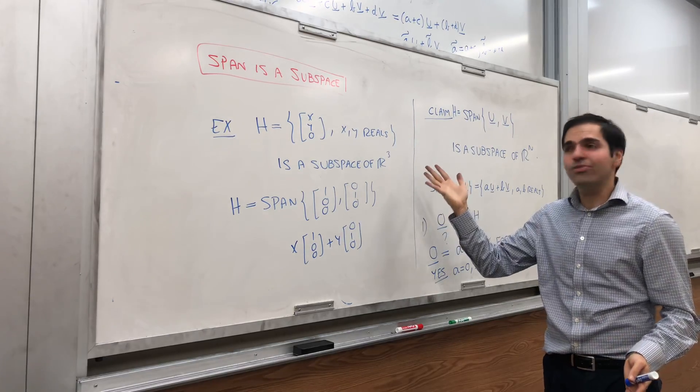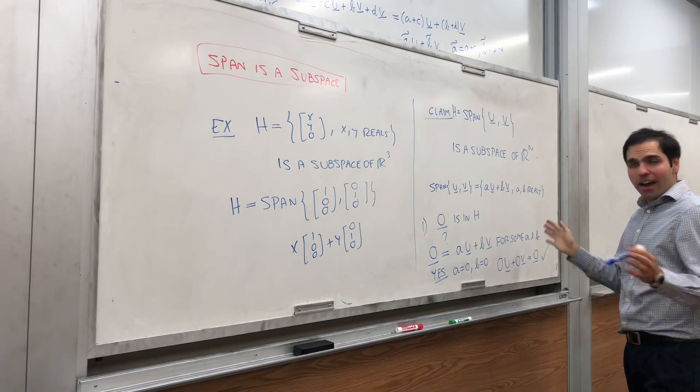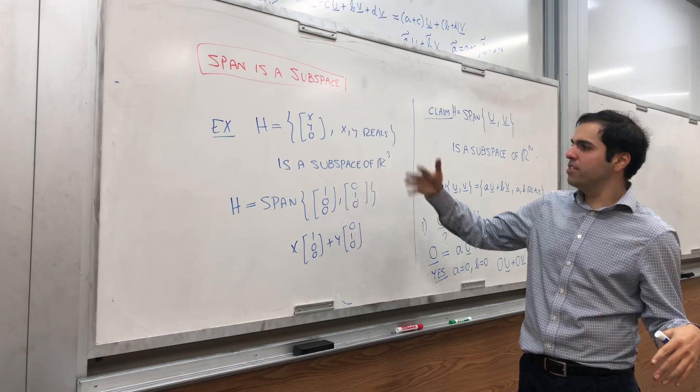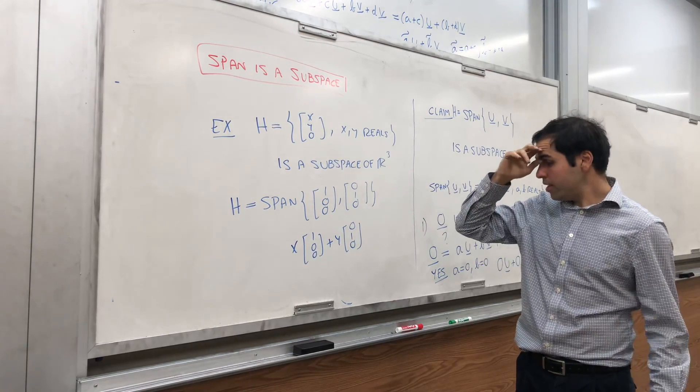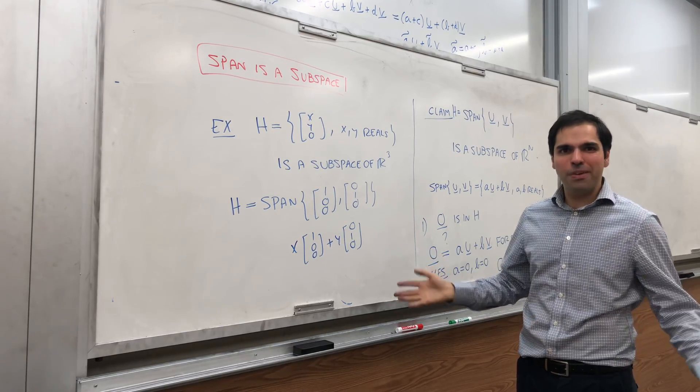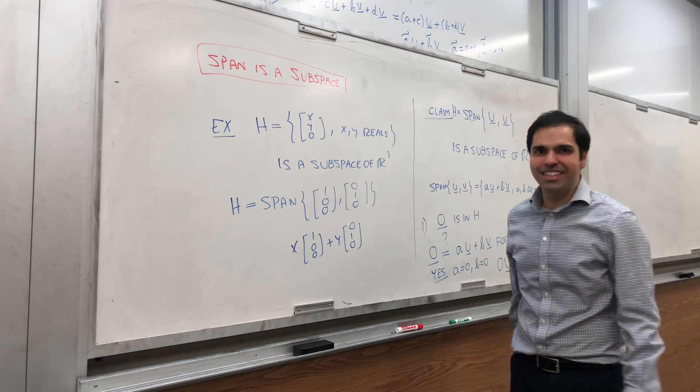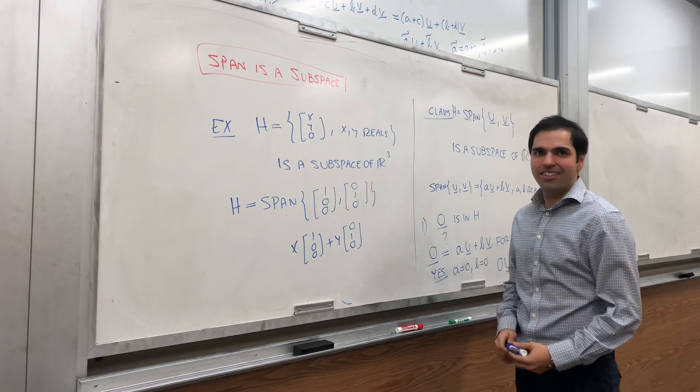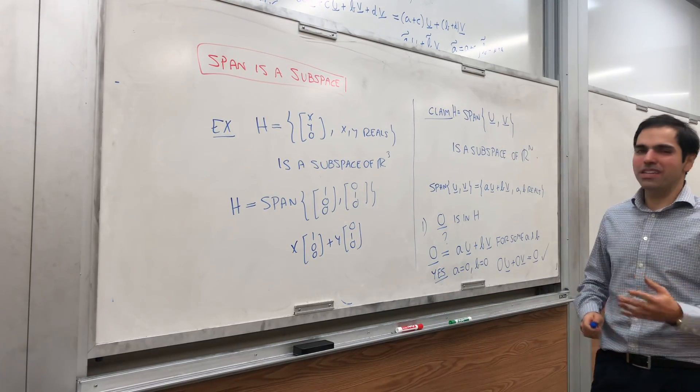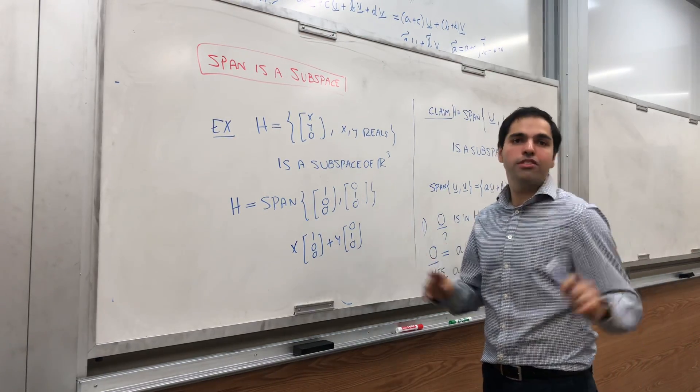And, by the way, some of the converse is true, because if the span of something is a subspace, well, it turns out any subspace is also the span of something. Namely, you just take the span of all the vectors in it, and then it becomes a subspace. It's a span of a big thing, but it still shows that subspaces are also the form span of anything. Or you just take a basis, a span of the basis. So, that's nice. But that's for something else.